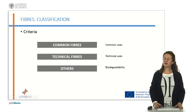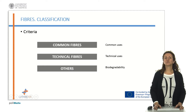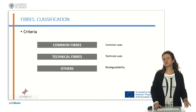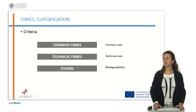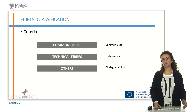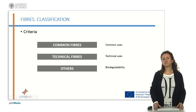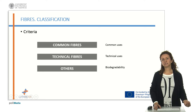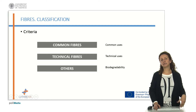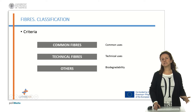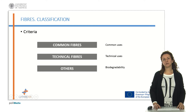The criteria to classify fibres could depend on different aspects. For example, common fibres because they are used for common uses like garments, or technical fibres because the fibres are used for technical uses, or other kinds of criteria like the biodegradability of the fibre.